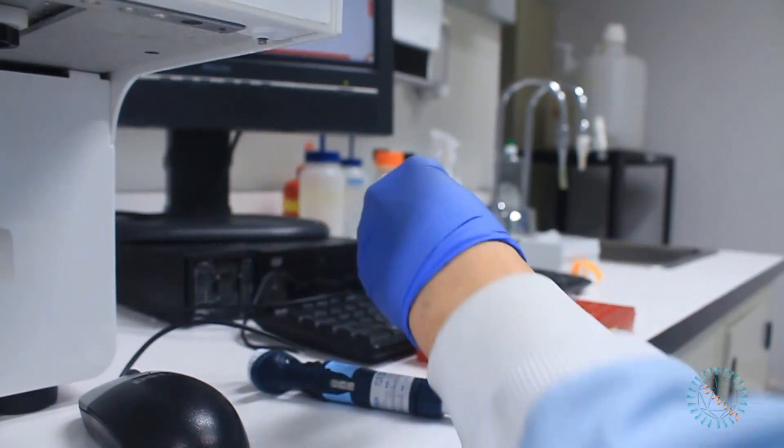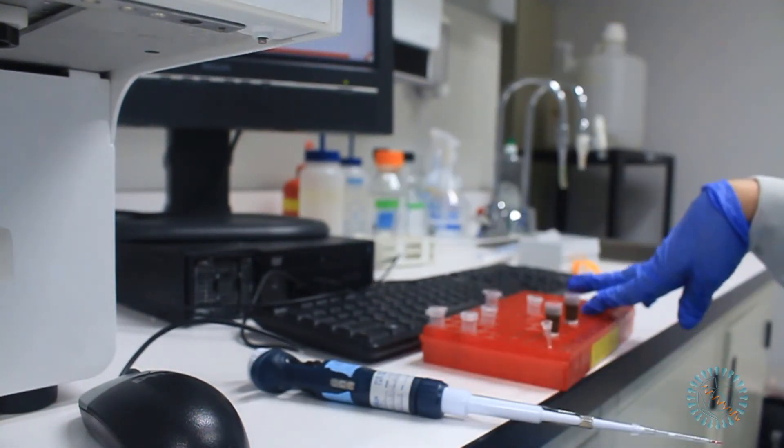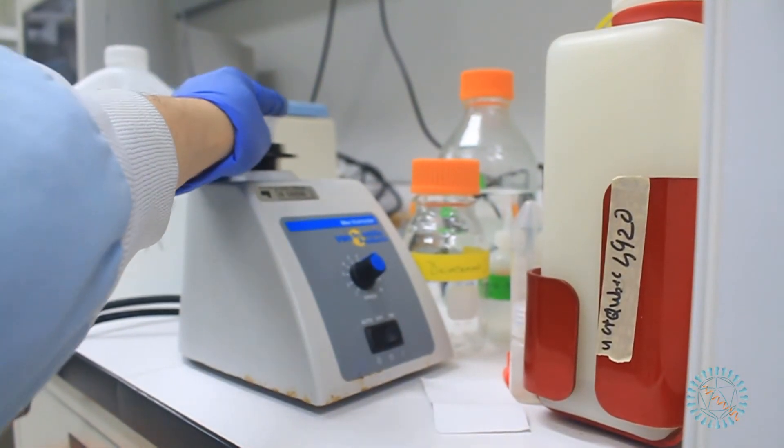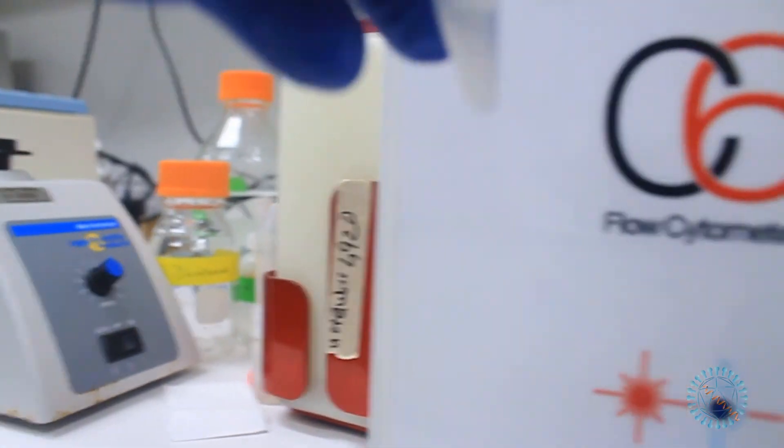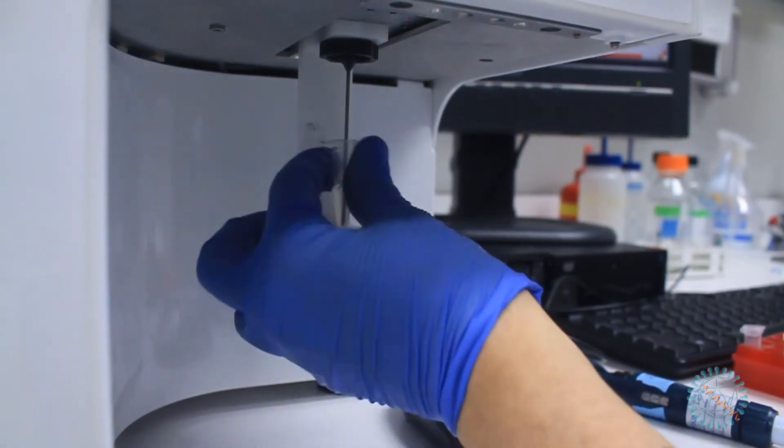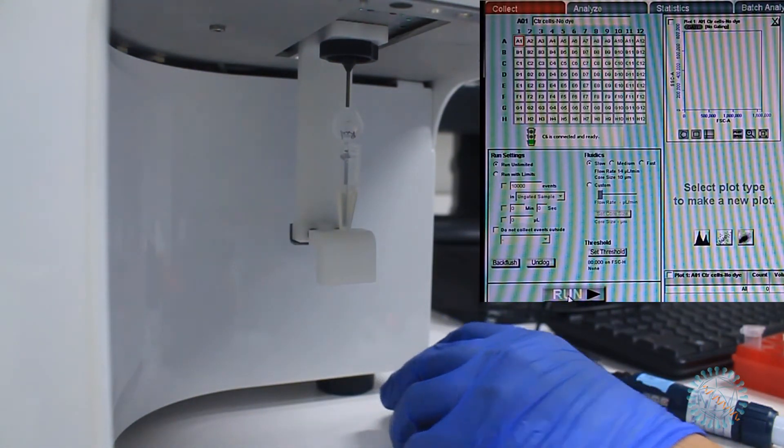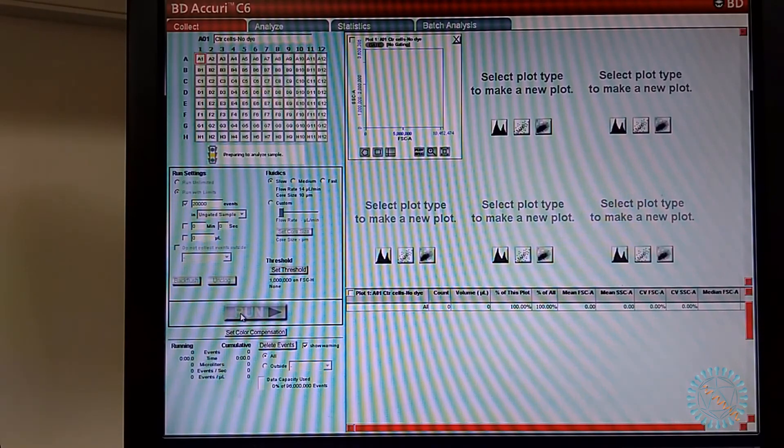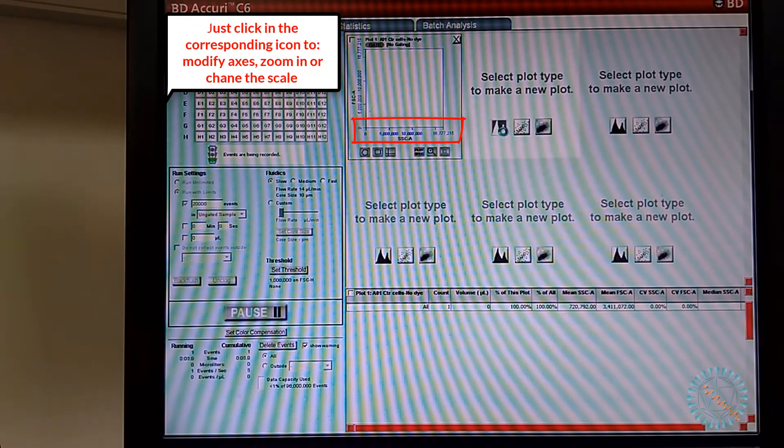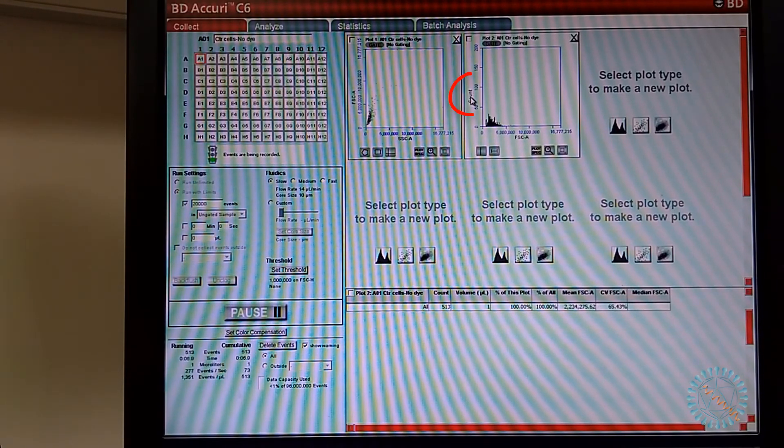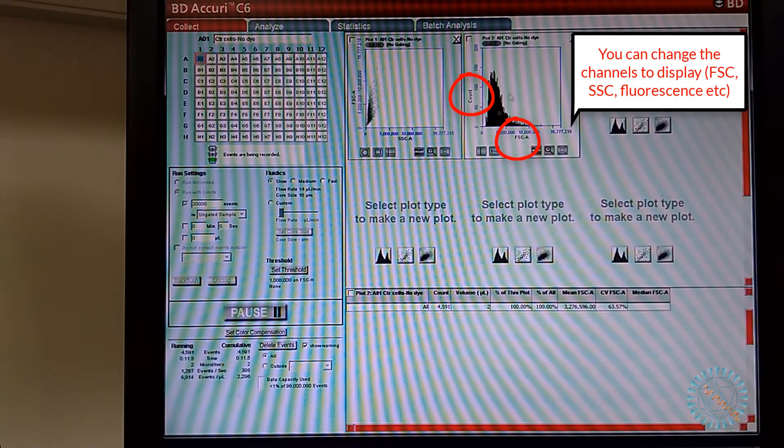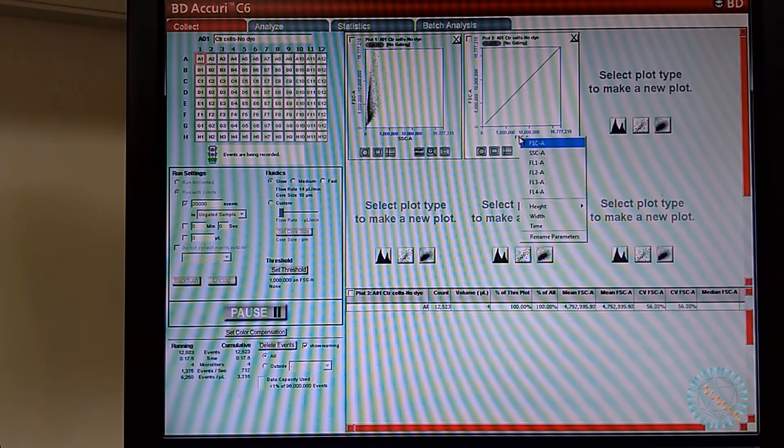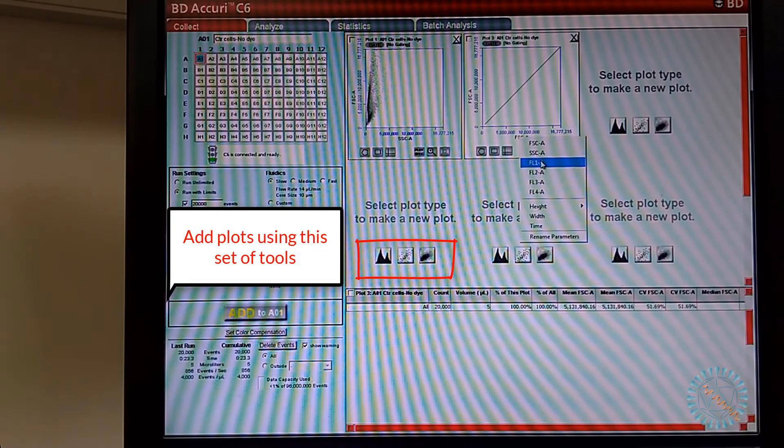Collecting data with the Accuri C6 is very simple. We just take the sample and resuspend the cells by scraping the tube on the rack. We homogenize the sample by quickly vortexing and then we can place the tube on the sample injection port. A simple click on the run button will start the pump and the cells will begin to flow through the instrument. The software itself is very easy to use. While data is being collected, you can modify the axis to show different parameters, modify the scale, or zoom in and out of the data set. You can also create new plots to show the information that is being collected in different channels. Depending on the sample you are running at the time, you may want to incorporate different graphs to the workspace.